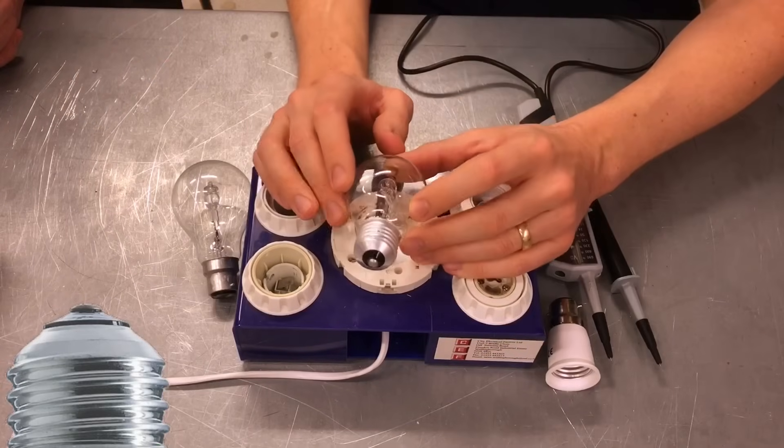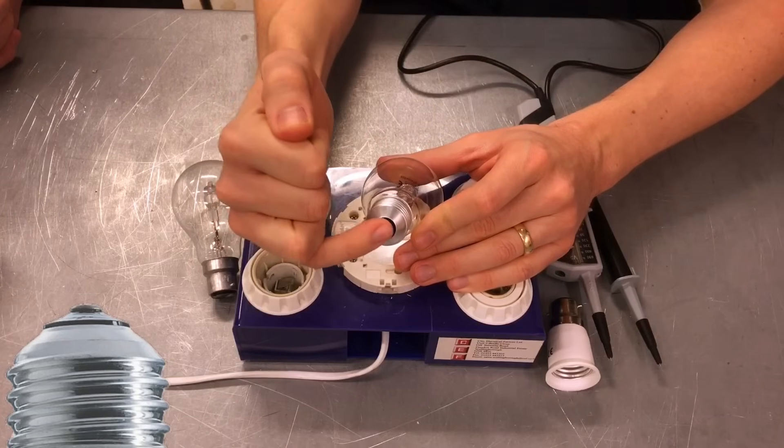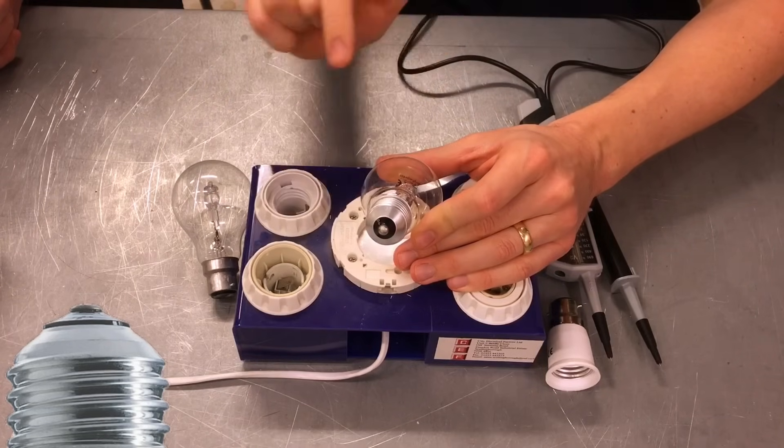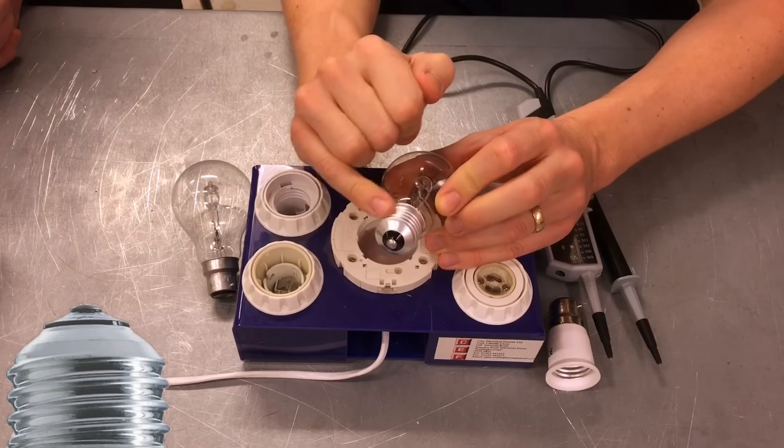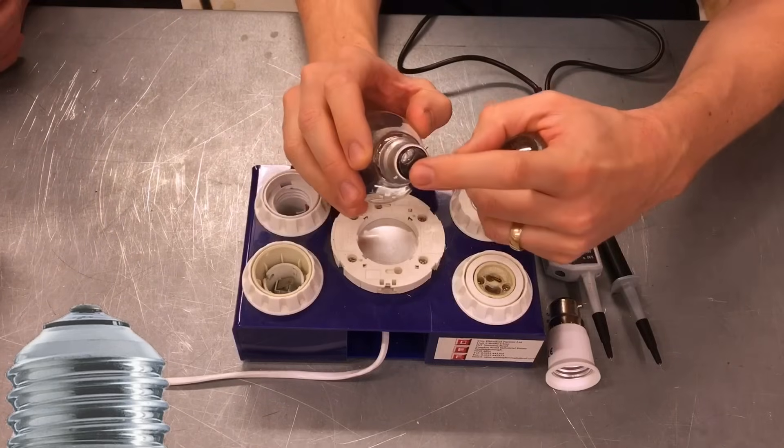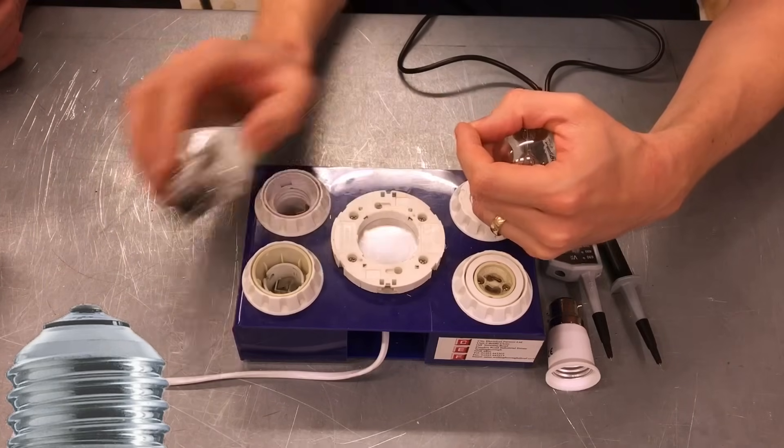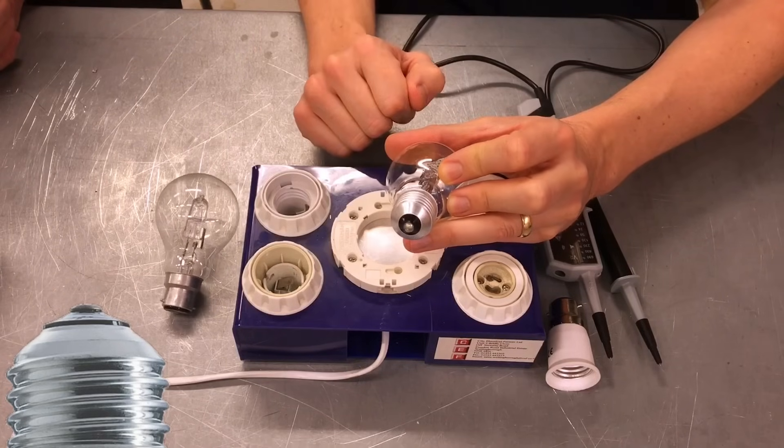When we look at an Edison screw type fitting, we've got a slightly different arrangement. We've got one pin here that connects onto the terminal inside the lamp holder, and then this is actually the second contact. So whereas on the bayonet cap you've got one contact and another that connects and makes the lamp turn on, here we've got one connection and another that connects and makes the lamp turn on.